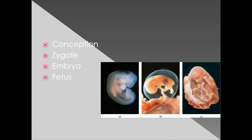That zygote will divide like most of our cells do, and it will do that for close to two weeks before it becomes an embryo, which you can see in picture B. The embryo is the first portion of life where development can occur. After about 12 weeks — the first trimester — the unborn child is referred to as a fetus, and that lasts all the way until birth.